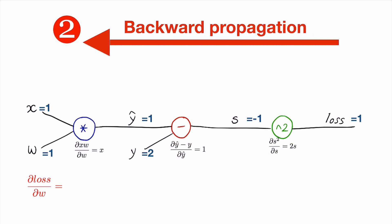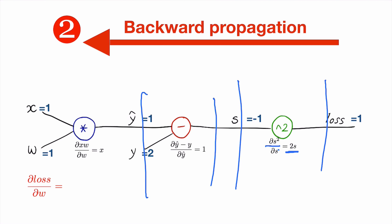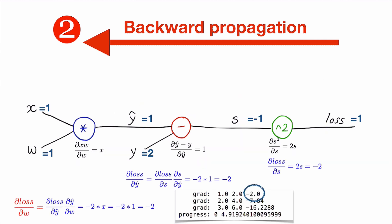The second step is doing backward propagation. We first compute local gradients for each gate. For the square gate, the input is s, so the local gradient is 2s. We can compute all local gradients trivially since we know the function and the input-output relationship. Then we apply them one by one in the backward manner. The gradient d_loss/d_s is 2s, and since s is minus 1, this becomes minus 2. Moving inward, we compute d_loss/d_y-hat using the chain rule, which gives minus 2 times the local gradient. Then we compute d_loss/d_w using the chain rule: minus 2 times the local gradient at the multiply gate, which is x, and we know x is 1, giving us minus 2 as our final gradient.